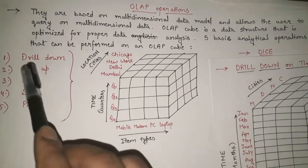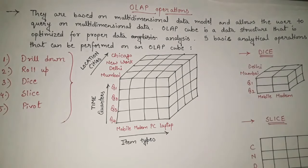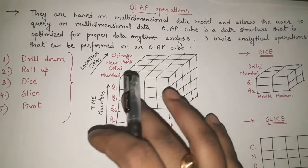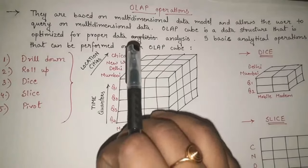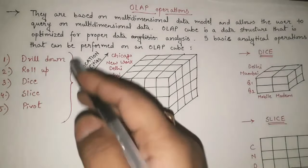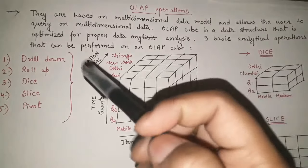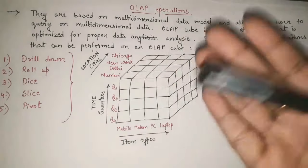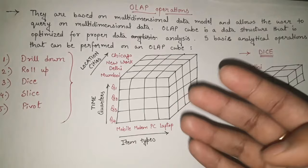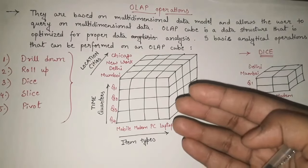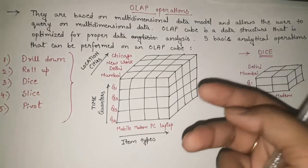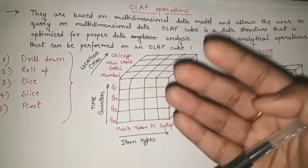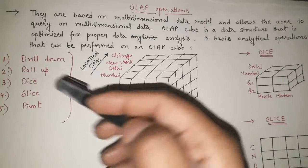The second operation is roll up. Roll up is exactly opposite to drill down. In drill down, if we want more detailed information we drill down. In roll up, whatever detail is given to us, if we want one level above — more generalized, overall information — we use roll up.